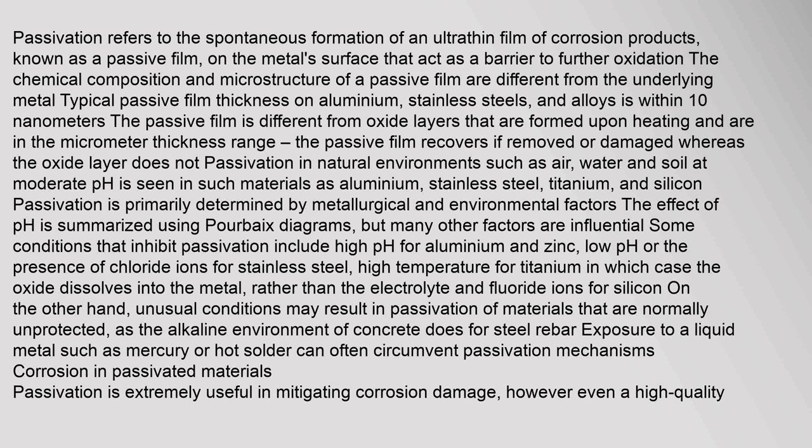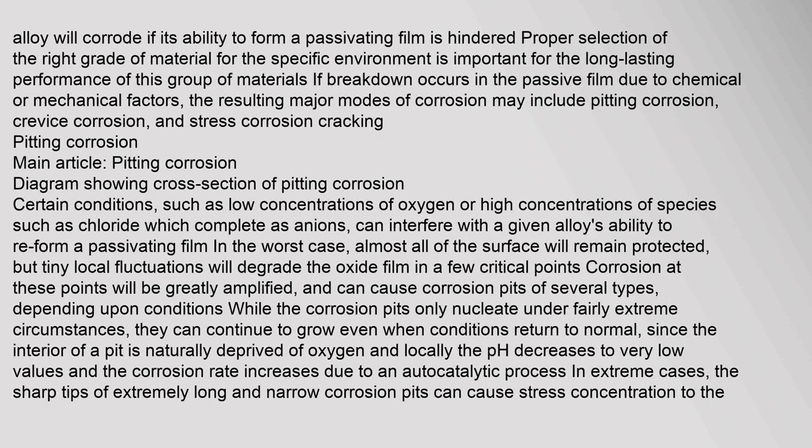Corrosion in passivated materials. Passivation is extremely useful in mitigating corrosion damage; however, even a high-quality alloy will corrode if its ability to form a passivating film is hindered. Proper selection of the right grade of material for the specific environment is important for long-lasting performance. If breakdown occurs in the passive film due to chemical or mechanical factors, the resulting major modes of corrosion may include pitting corrosion, crevice corrosion, and stress corrosion cracking.